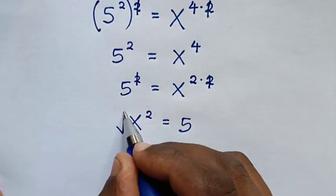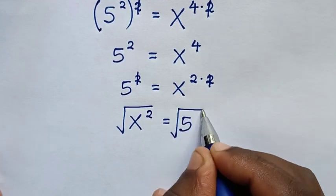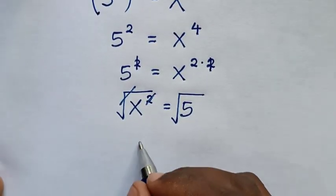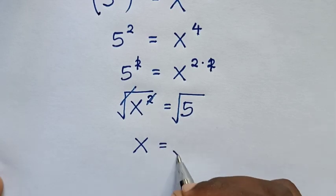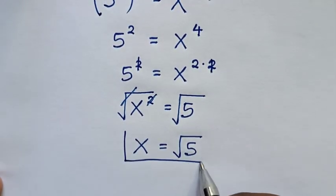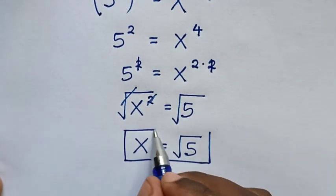Then we will apply square root to both sides. So this square root will cancel with this square. Then it will be x = √5. Therefore this is the final answer for the value of x in our problem.